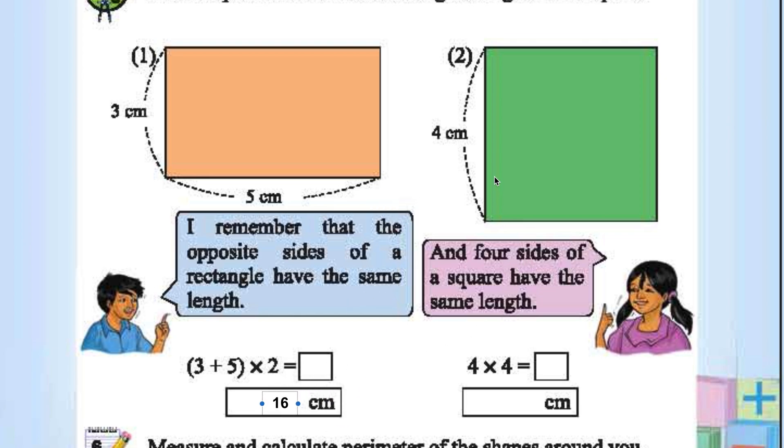What about square? 4 times 4. 4 plus 4 plus 4 plus 4, that is 4a. Here is the perimeter, 4 times 4 is 16, so 16 centimeters.